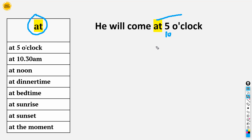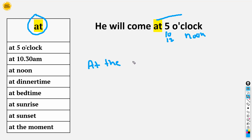We also use 'at' with: noon — 'He will come at noon'; dinner time — 'He will come at dinner time'; bedtime — 'He will come at bedtime'; sunrise — 'at sunrise'; sunset — 'at sunset'; and 'at the moment'. For example: 'At the moment, I am speaking with you.'